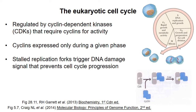In general, the progression through the different stages of the cell cycle is controlled by cyclin-dependent kinases. Specific cyclin proteins are expressed at different phases of the cell cycle, and the cyclins control which kinases are active in each phase.